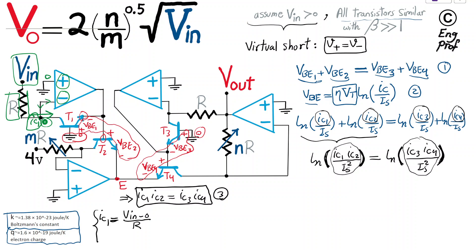For IC2: the collector current of T2 comes from the 4-volt reference through the potentiometer MR — where M is a ratio between 0 and 1. Again, nothing flows through the op-amp input terminal. Virtual short forces the negative terminal to 0 volts. So IC2 = (4 − 0) / MR = 4 / MR.